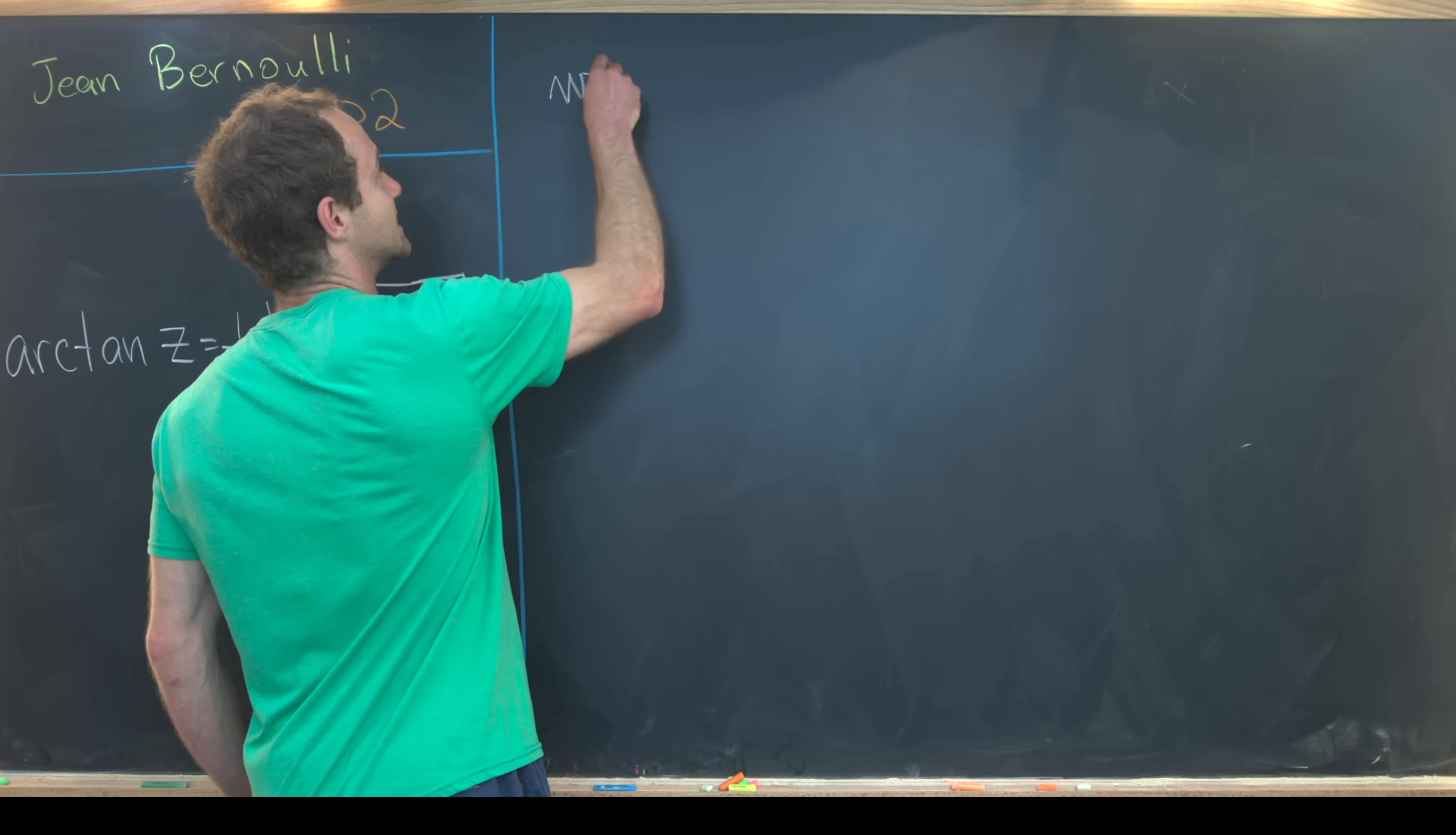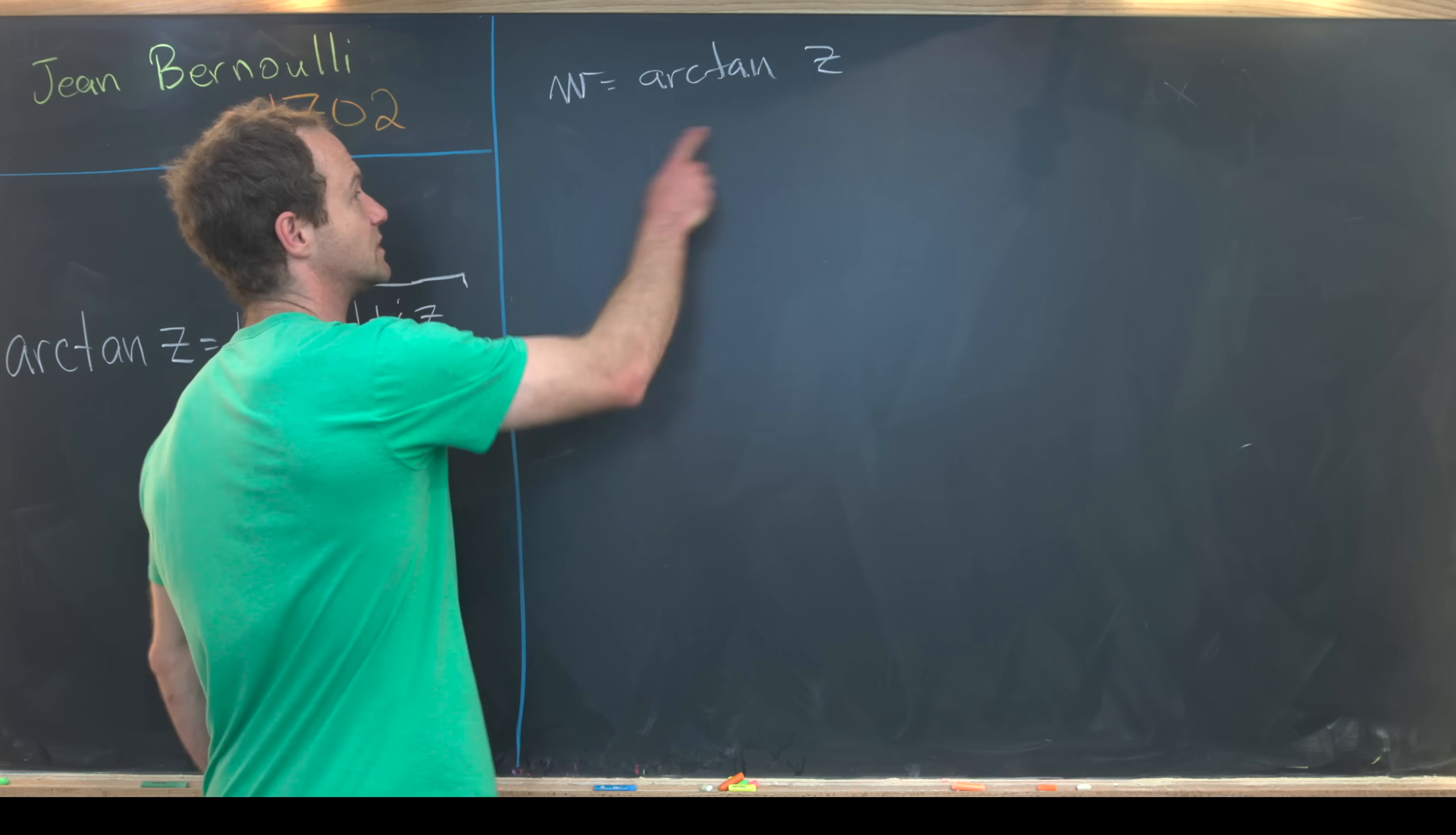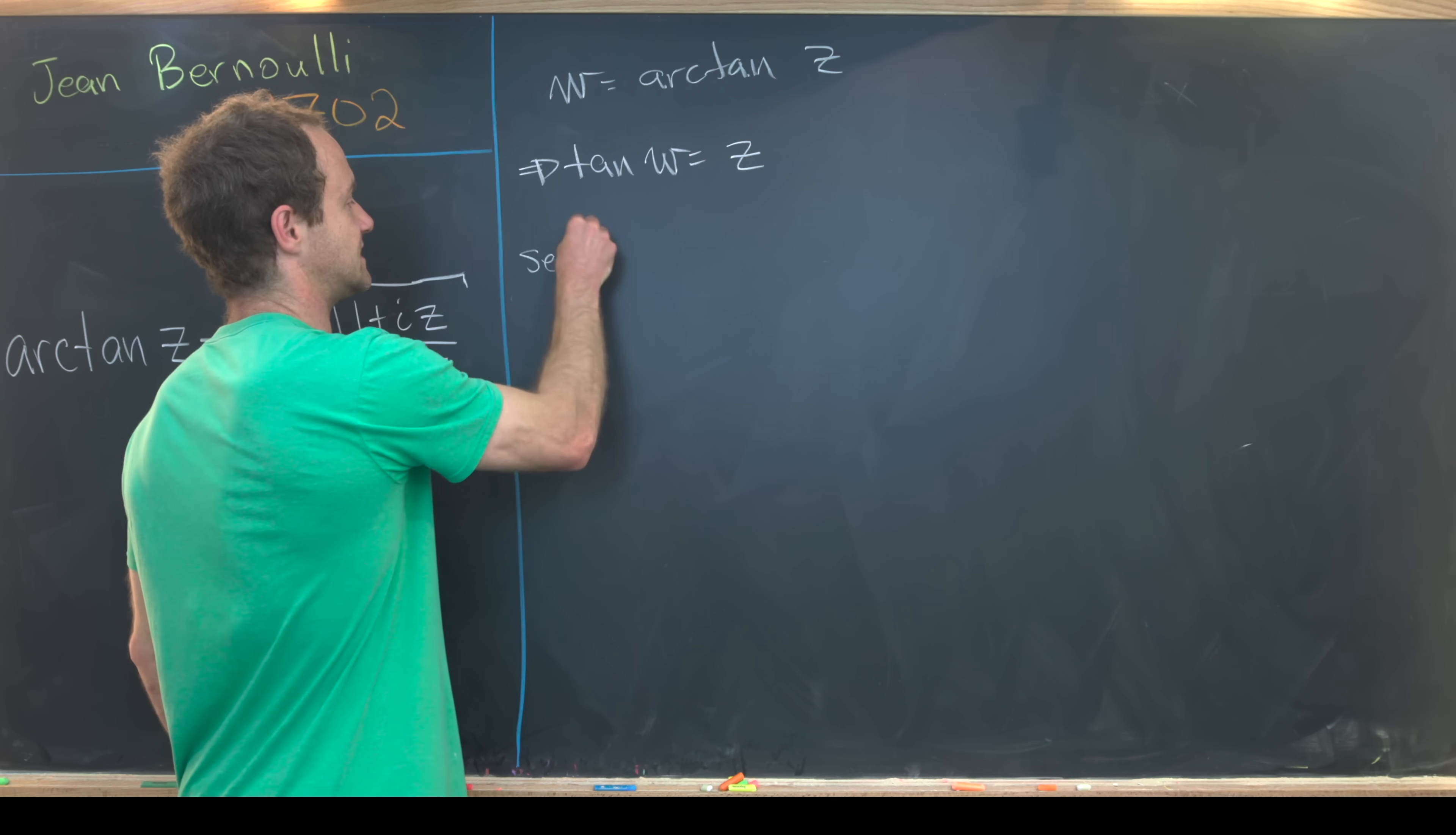I'm going to start by setting w equal to arctan of z, and recalling that our goal is to find dw/dz, which would be the derivative of arctan. We'll do this by passing this to the tangent function. That means tan w is equal to z.